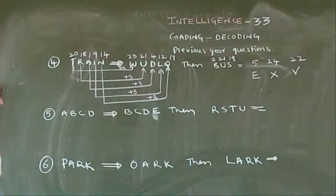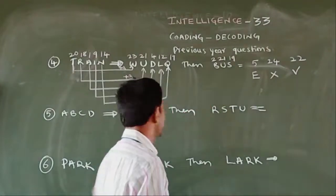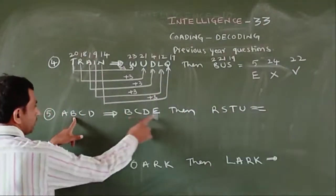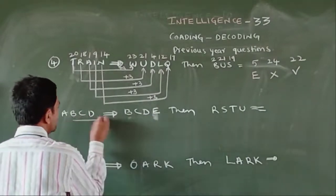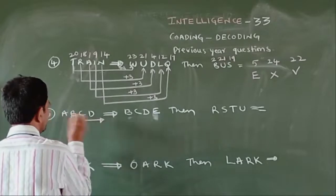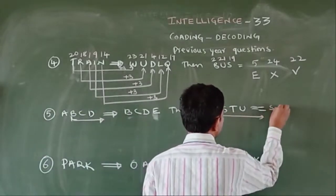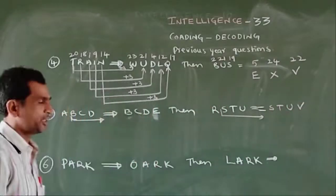Next, ABCD is coded as BCDE. Then RSTU is coded as what? ABCD becomes BCDE. RSTU becomes STUV. The answer is STUV.